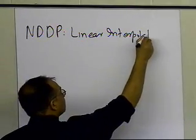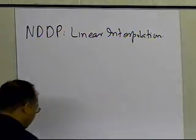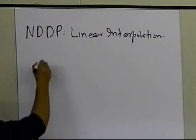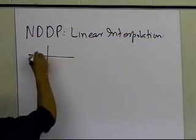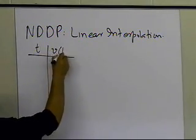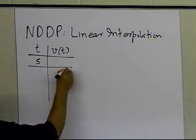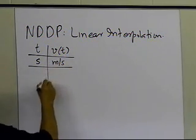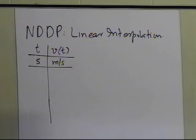How do we do linear interpolation using Newton's divided difference polynomial method? In this example, someone gives you velocity as a function of time for a rocket. Time is given in seconds, velocity in meters per second, and the upward velocity is provided.